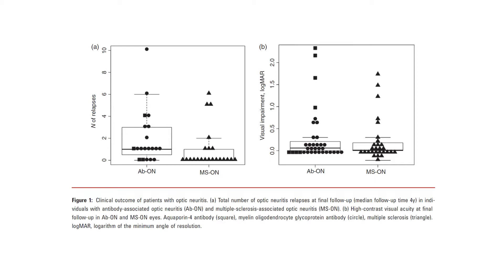It should be noted that the squares on the right figure represent the eyes of children with aquaporin-4 antibody NMOSD, of which there were only four children in the study, two of whom were registered blind at final follow-up. In contrast, none of the 16 children with MOG antibody-associated disease were registered blind.